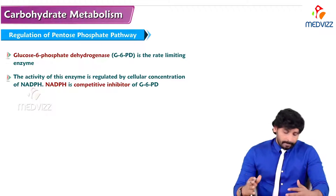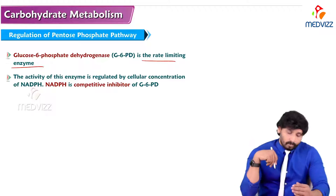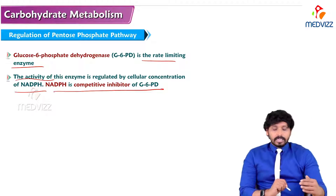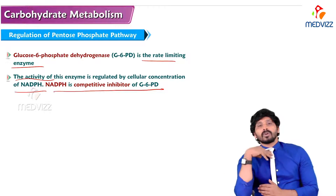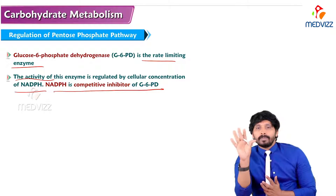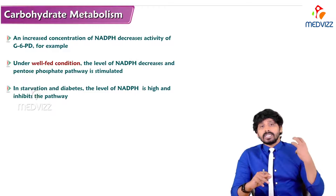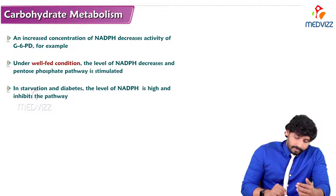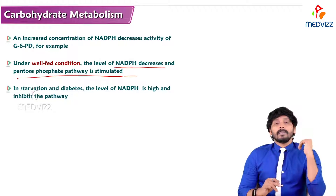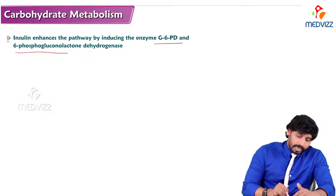Regarding regulation of the pentose phosphate pathway: glucose 6-phosphate dehydrogenase (G6PD) is the rate-limiting enzyme, and it is connected to Von Gierke's disease and glycogen storage disorders. The activity of this enzyme is regulated by the cellular concentration of NADPH — NADPH is a competitive inhibitor of G6PD. When NADPH levels are high, G6PD activity decreases to stop the pathway. Under fed conditions, NADPH decreases and the pathway is stimulated; in starvation and diabetes, high NADPH inhibits the pathway. Insulin enhances the pathway by inducing G6PD and 6-phosphogluconolactone dehydrogenase.